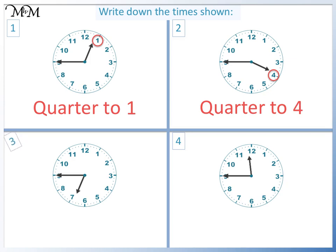Question three. The minute hand is pointing to nine, so quarter to. The next hour is seven. So the time is quarter to seven.